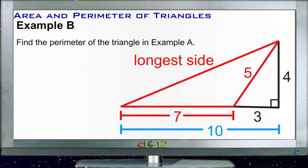Example B, find the perimeter of the triangle in example A. So here's our triangle in the red from the original example. We need to find the perimeter of that triangle. And we knew the base. And we knew the slant height. So that's two of our three sides. But we need to know the dimension of this longest side in order to find the perimeter.